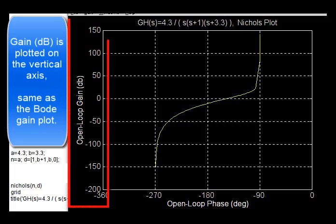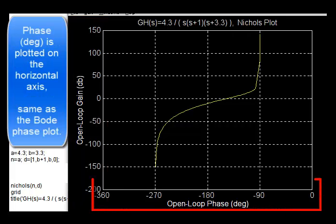Gain in dB is plotted on the vertical axis, same as the Bode gain plot. Phase in degrees is plotted on the horizontal axis, same as the Bode phase plot.